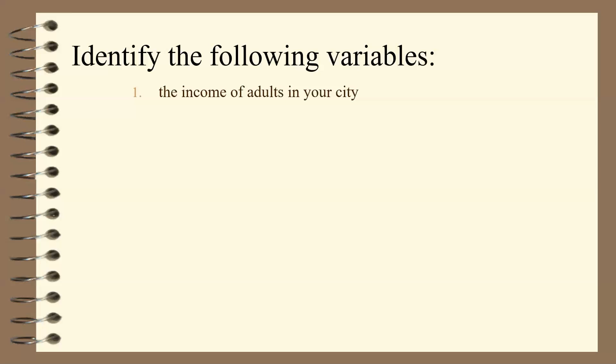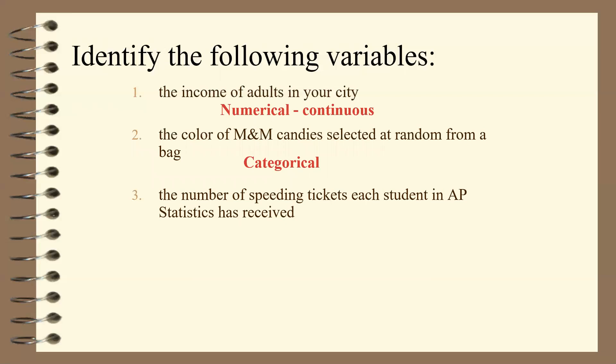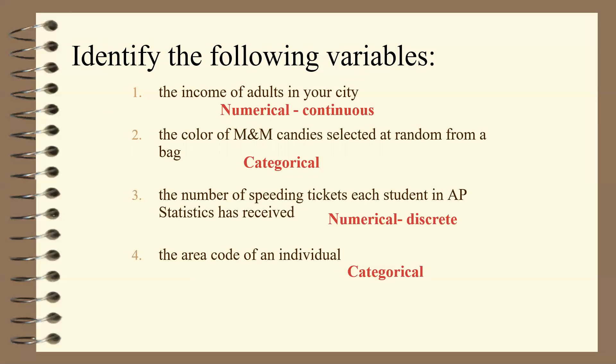Let's practice identifying the following variables. The income of adults in your city — that is a number, so it is numerical, and it is also continuous because you can extend decimals to tenths, hundredths, thousandths, etc. The color of an M&M candy selected at random from a bag — color is a category, so that's categorical. The number of speeding tickets each student has received — that is numerical and discrete, because you can't have half a ticket: it's one, two, three, and so forth. The area code of an individual — this is actually categorical. While it is a number, you can't place one area code as bigger or smaller than another on a number line. That number represents an area and has no value on a number line, so area code is categorical.